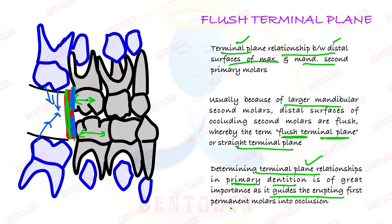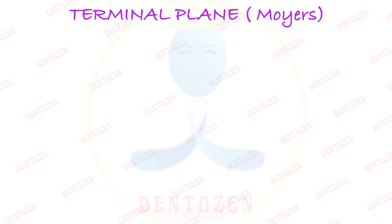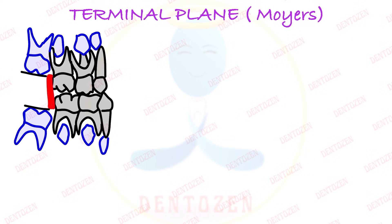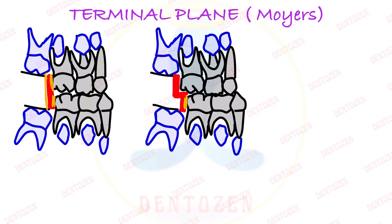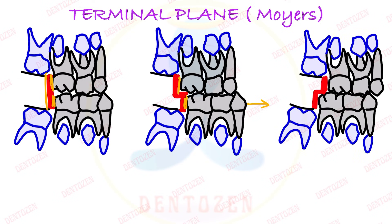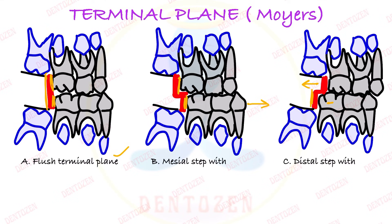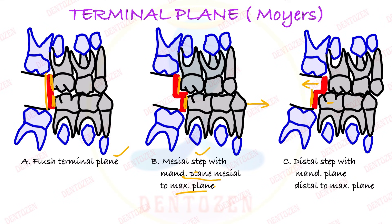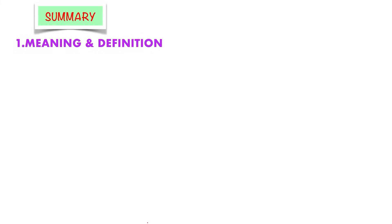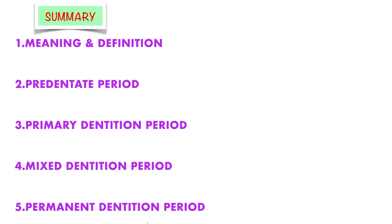The terminal plane relationship is important because it guides erupting permanent first molars into occlusion. According to Moyer, three types exist: flush terminal plane when both distal planes are in the same line; mesial step when the mandibular distal plane is mesial to the maxillary; and distal step when the mandibular distal plane is distal to the maxillary. This relationship guides the permanent first molars and influences the development of occlusion in permanent dentition.